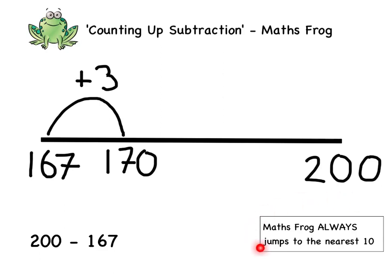From 170, we're still jumping to the nearest 10, but from 170 we could jump straight to 200 rather than do lots of smaller jumps. So from 170, the nearest 10 is 180.